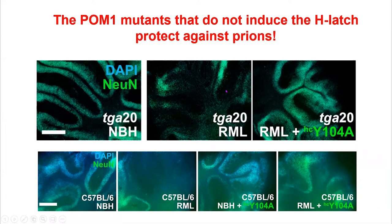We repeated the experiment with wild-type black six slices: prion infection destroys the slice, but adding the mutated antibody again protects it. I think this is huge — essentially, a point mutation designed by rational considerations is capable of transforming a toxic anti-prion antibody into a protective anti-prion antibody.